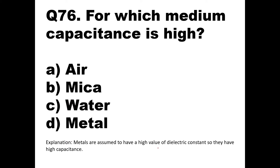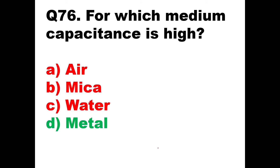Question number 76: For which medium is capacitance high? Metals have a high value of dielectric constant, so they have high capacitance. Option D is the right answer: metal.